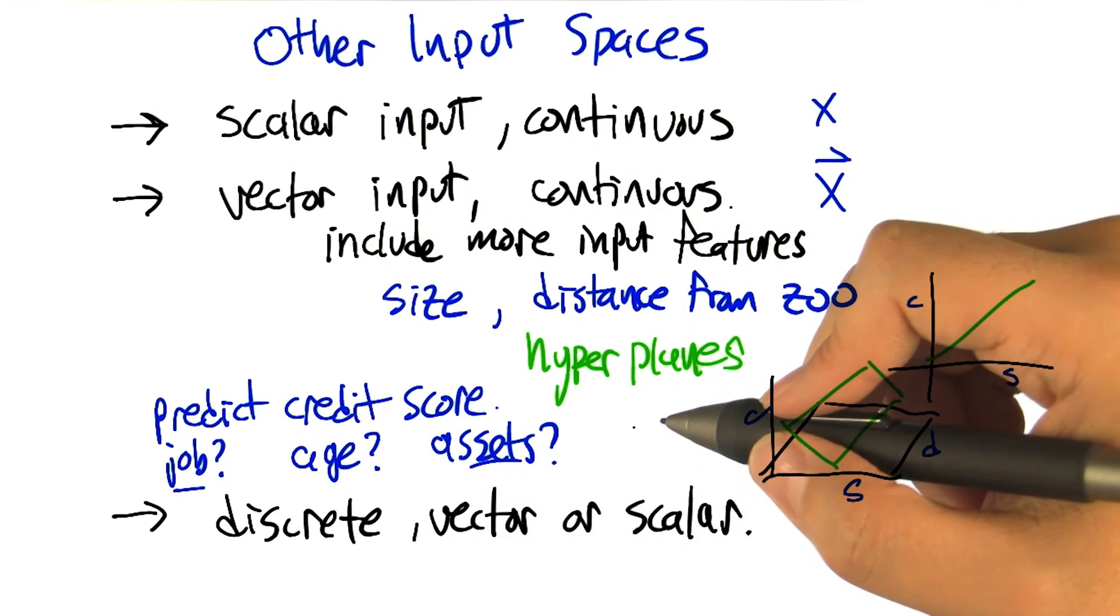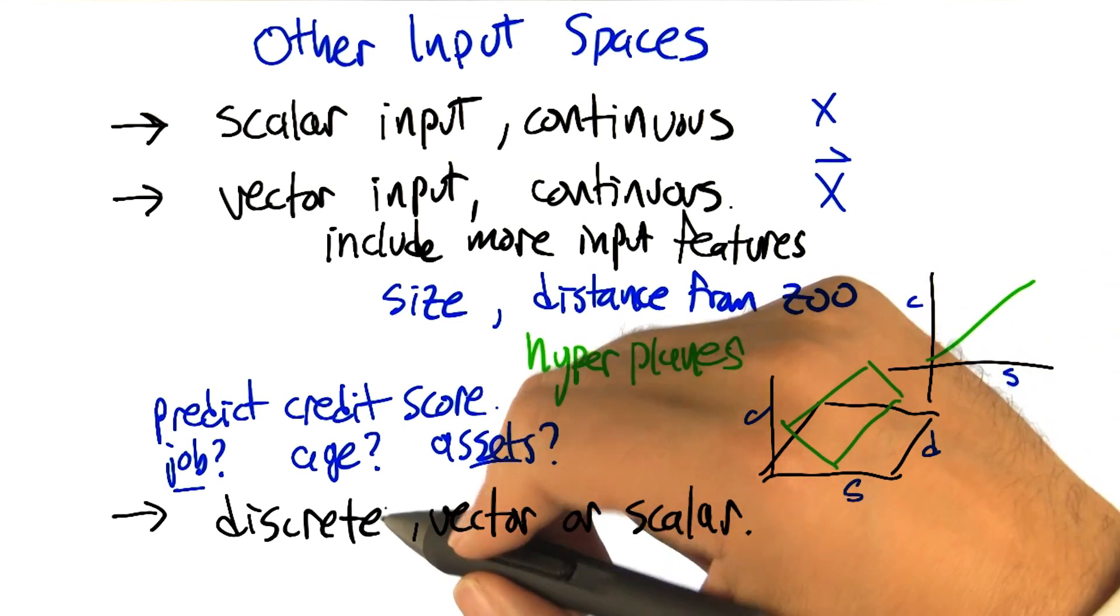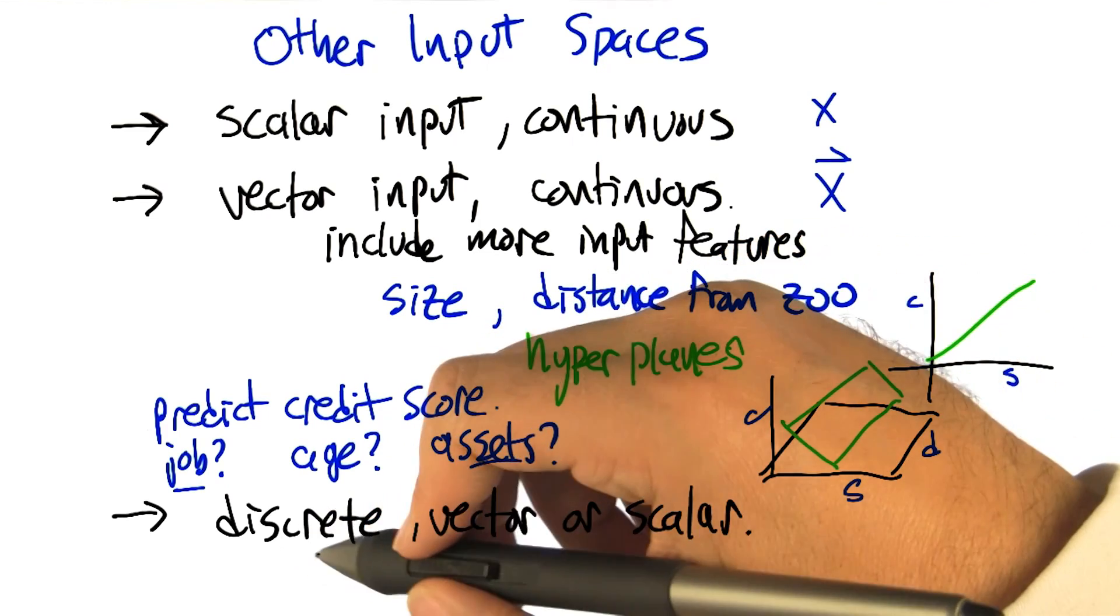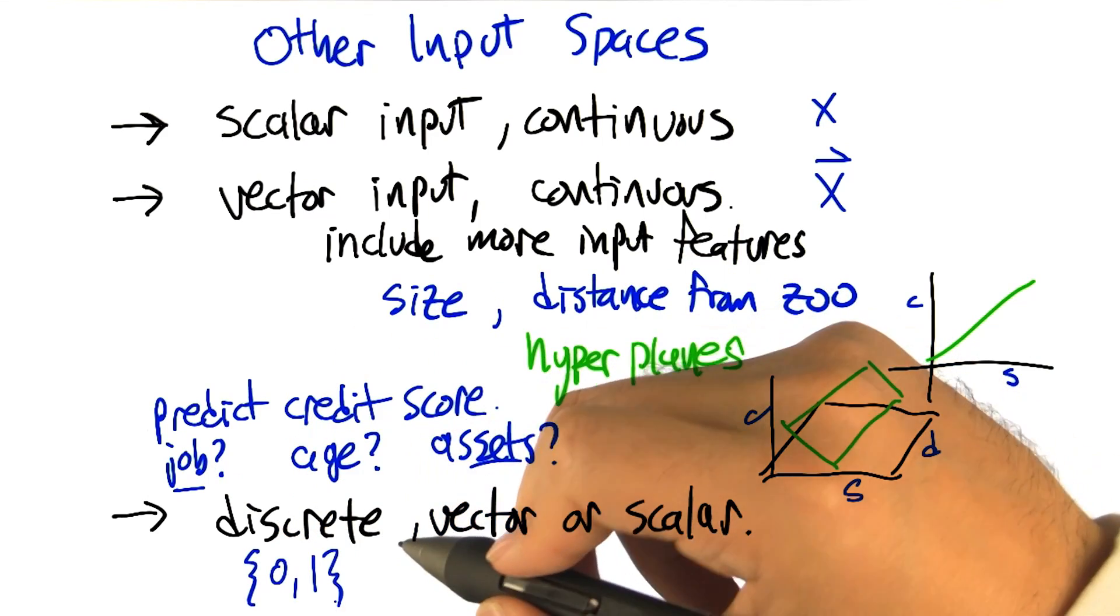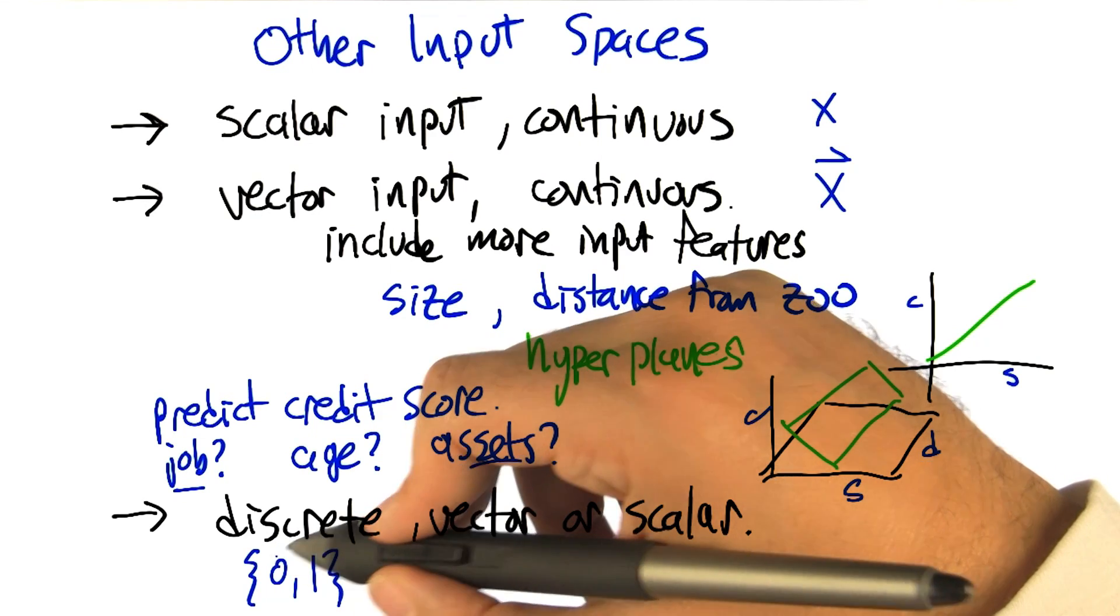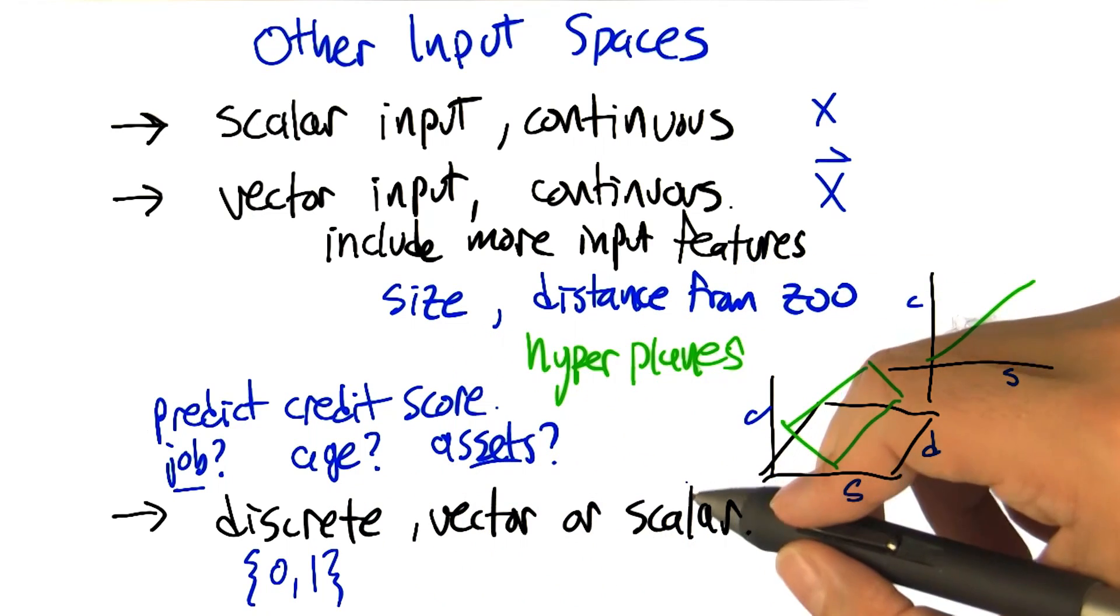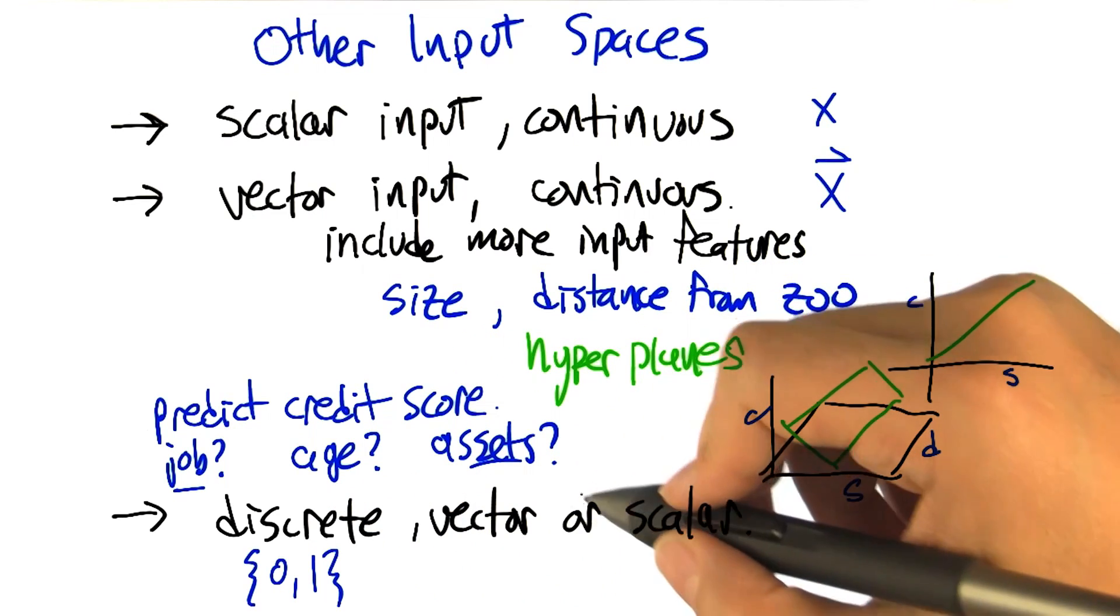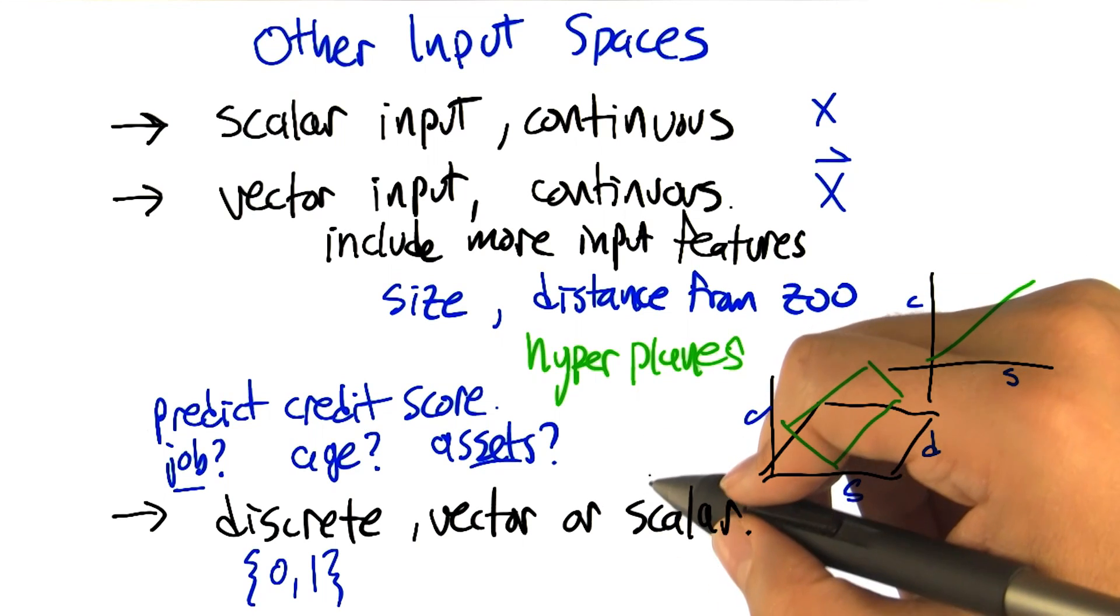And one of the nice things about these kinds of regression approaches that we've been talking about, like polynomial regression, is that we can actually feed in these discrete variables as well. Certainly if they're Boolean variables, like do you have a job or not, you can just think of that as being a kind of number that's just 0 or 1. No, I don't have a job. Yes, I have a job. What if it's something like how many houses do you own? That's pretty easy, because you could just treat that as a quantity, a scalar type quantity.